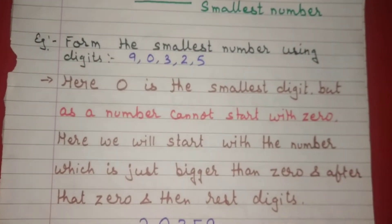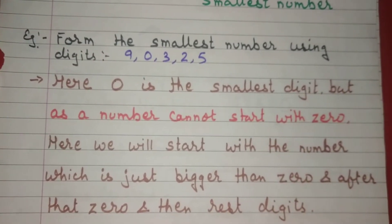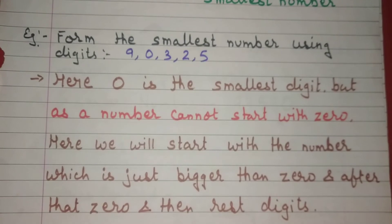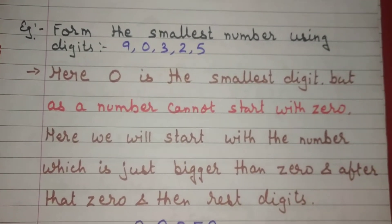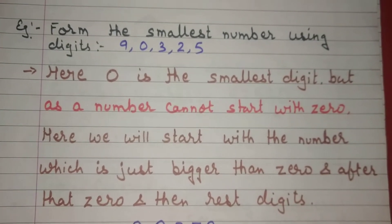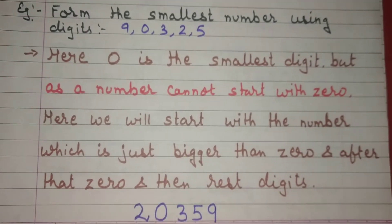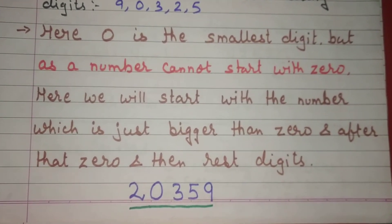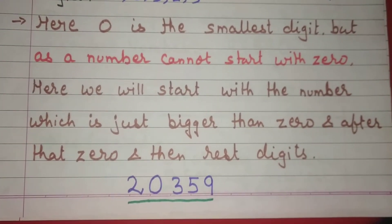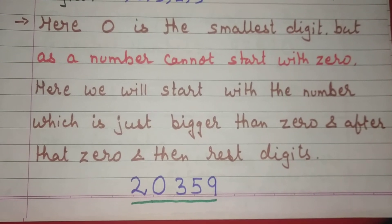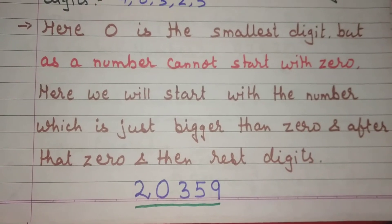Let's take another example. Form the smallest number using digits 9, 0, 3, 2, 5. Here 0 is the smallest digit, but a number cannot start with 0. So we will start with the number which is just bigger than 0, then write 0, and then the rest of the digits. So the smallest number here will be 20359.